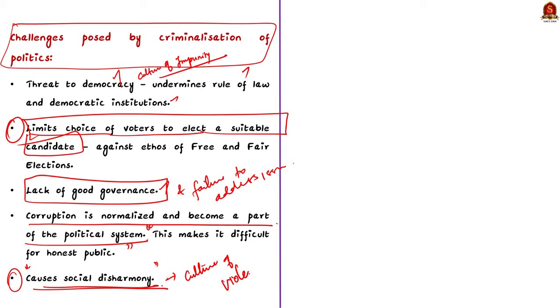The fourth challenge is it leads to a situation where corrupt practices get normalized in society and become part of the political system. This makes it difficult for honest people to work efficiently and ultimately erodes public trust in government institutions. Fifthly, it causes social disharmony by introducing a culture of violence in society and sets a bad precedent for youth to follow, reducing people's faith in democracy as a system of governance.